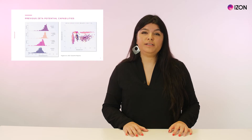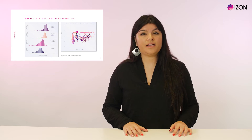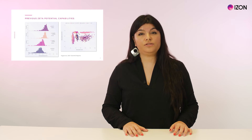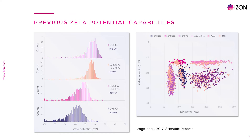Previous and current EXOID-based zeta potential characterizations can render data as detailed histograms of concentration versus charge or 2D plots of size versus charge. In this histogram of counts versus charge, we can see the high sensitivity of TRPS zeta potential measurements, as liposomes made with different phospholipids or different proportions of mixed phospholipids return different zeta potentials.